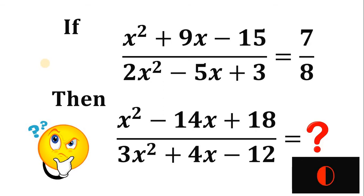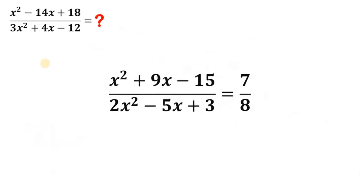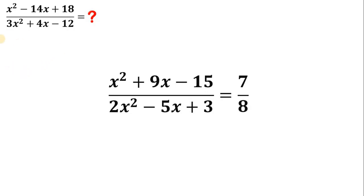Now let's answer this question together. Our basic goal here is to evaluate the expression x squared minus 14x plus 18 all over 3x squared plus 4x minus 12, given the equation x squared plus 9x minus 15 all over 2x squared minus 5x plus 3 equals 7 over 8.